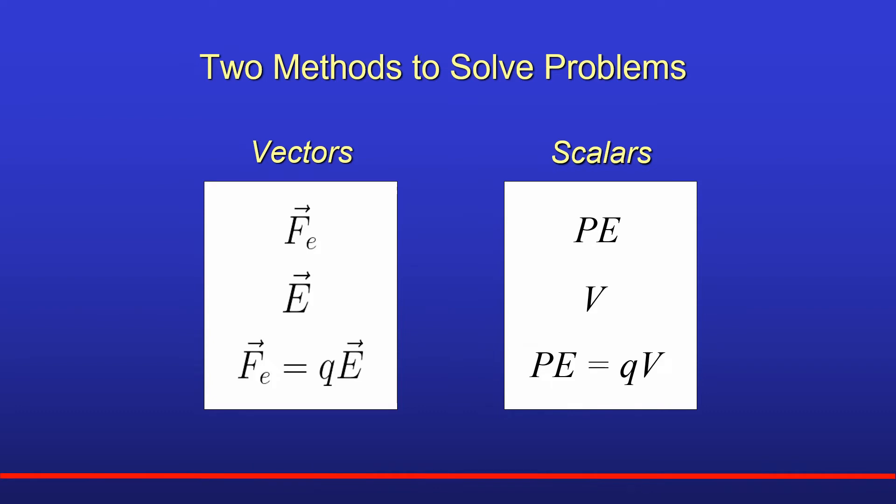You see the two methods side by side — they look similar. On the left they're all vectors; on the right they're all scalars. But how do they relate to one another? By using these two methods to describe the same situation we'll see how the electric field is related to changes in potential.